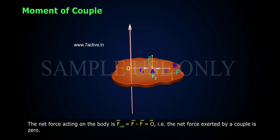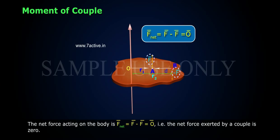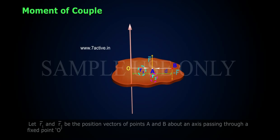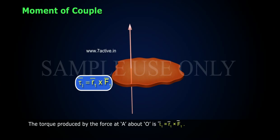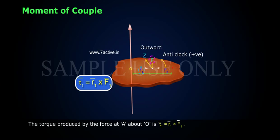The net force acting on the body is F net equals F minus F equals zero. That is, the net force exerted by a couple is zero. Let R1 and R2 be the position vectors of points A and B about an axis passing through a fixed point O. The torque produced by the force at A about O is τ1 equals R1 cross F.